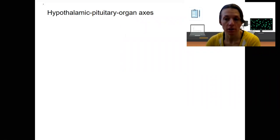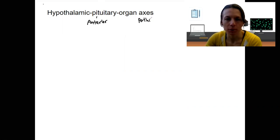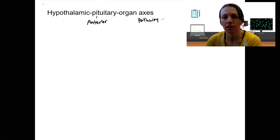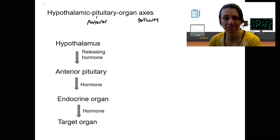We're not done with the hypothalamus and pituitary yet. This video is about the hypothalamic-pituitary-organ axes. These all refer to the anterior pituitary, and by 'axis' it means a pathway with multiple steps. You've already actually seen this. Let's draw out the generic signaling from the hypothalamus to the anterior pituitary to organs — other endocrine organs — which then release a hormone. This should not look like anything super new.